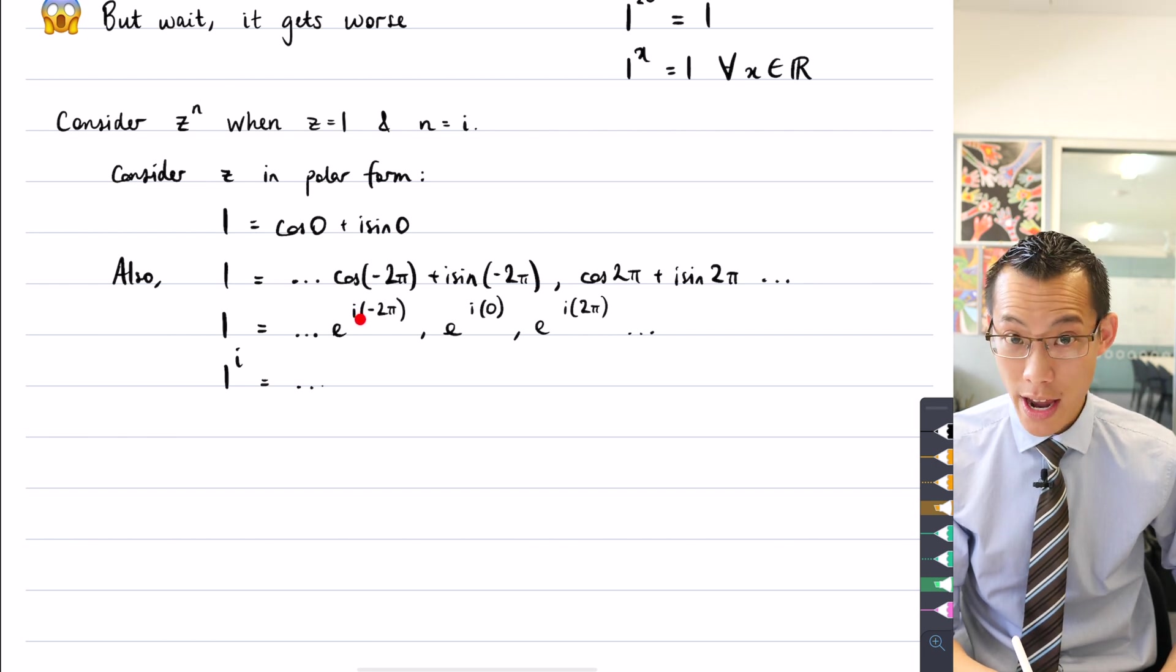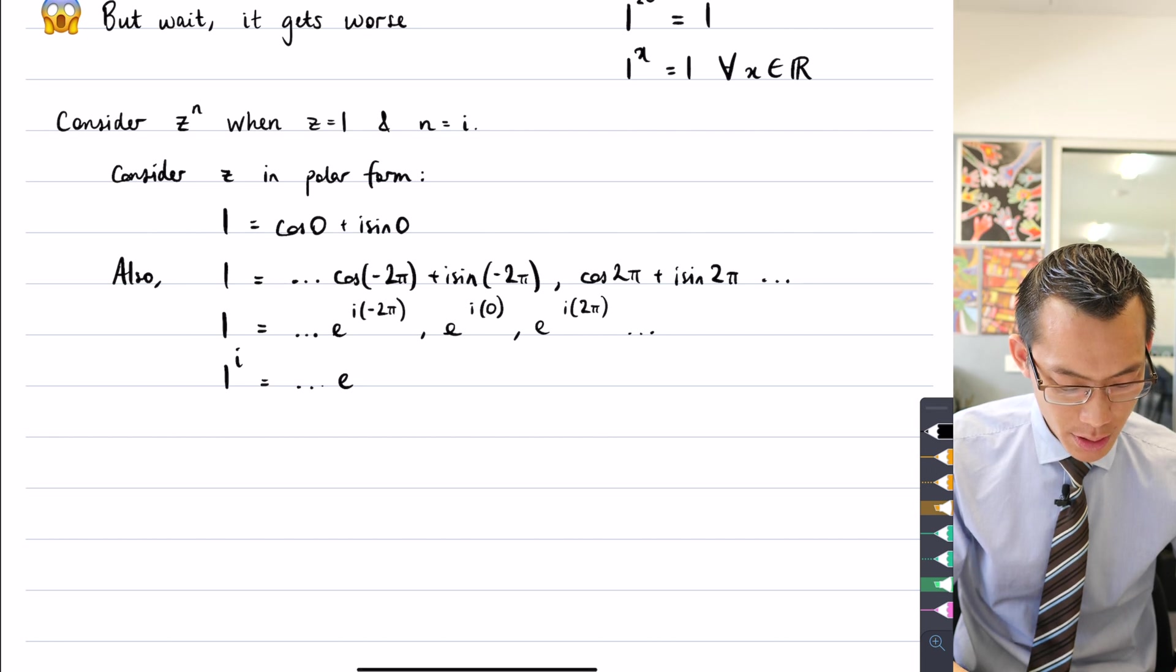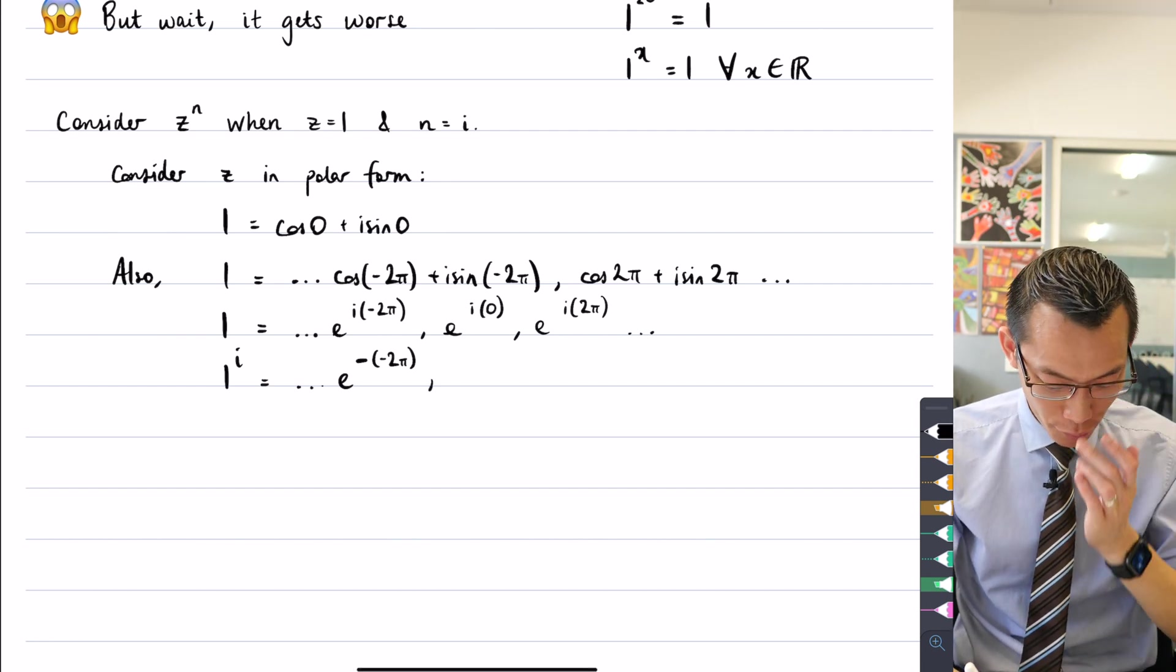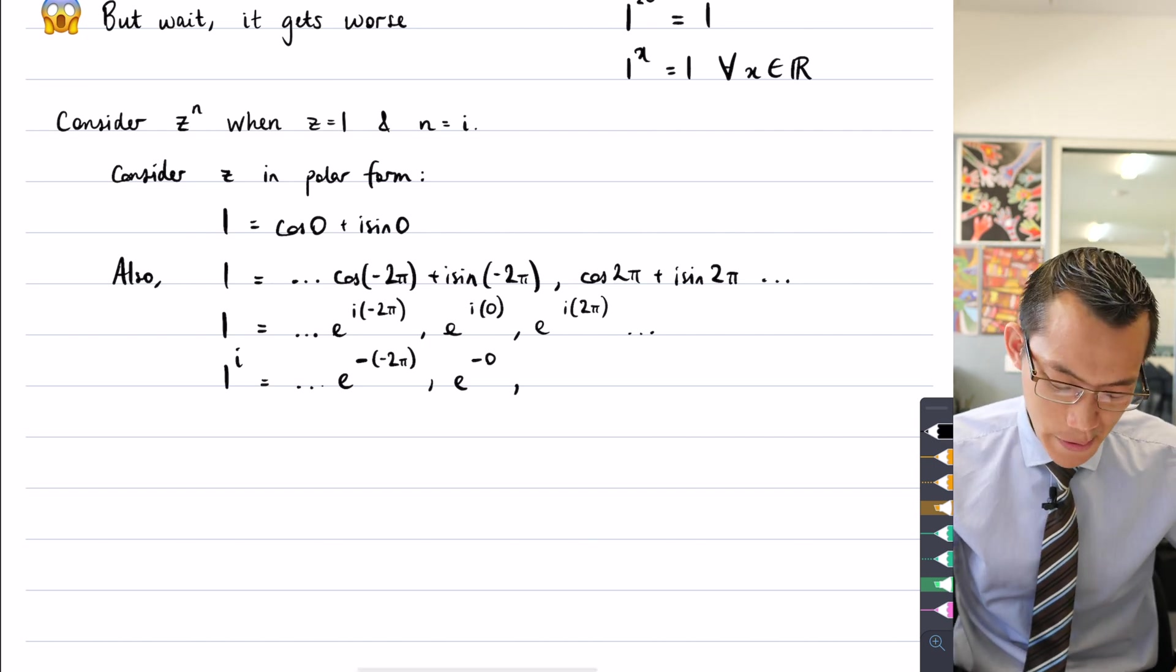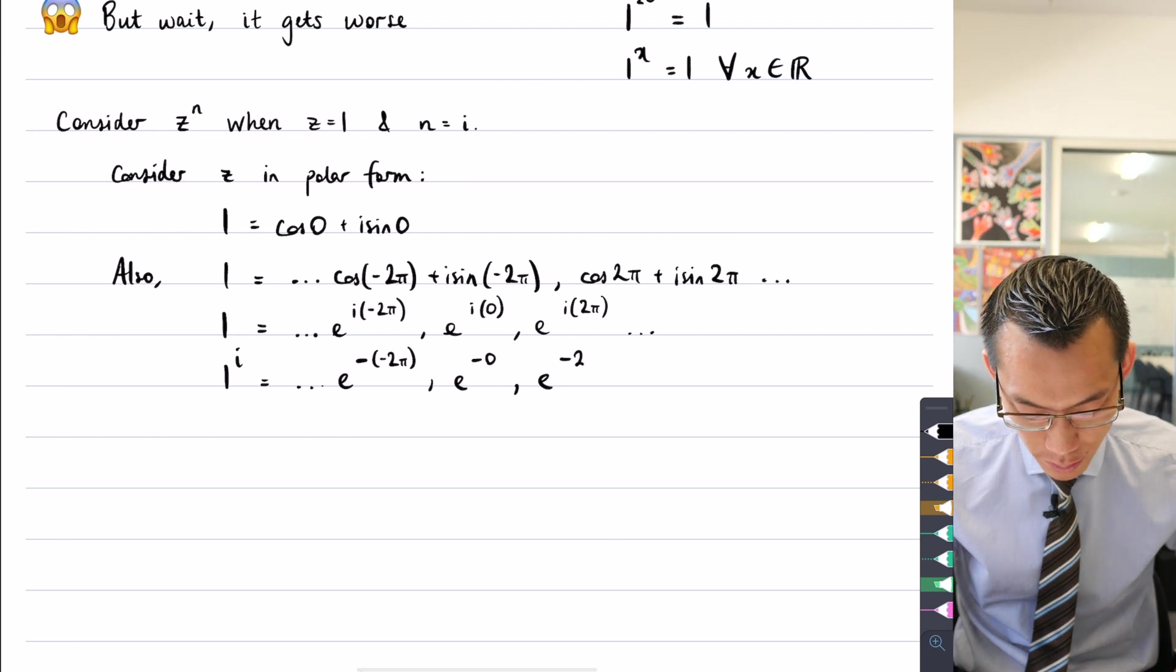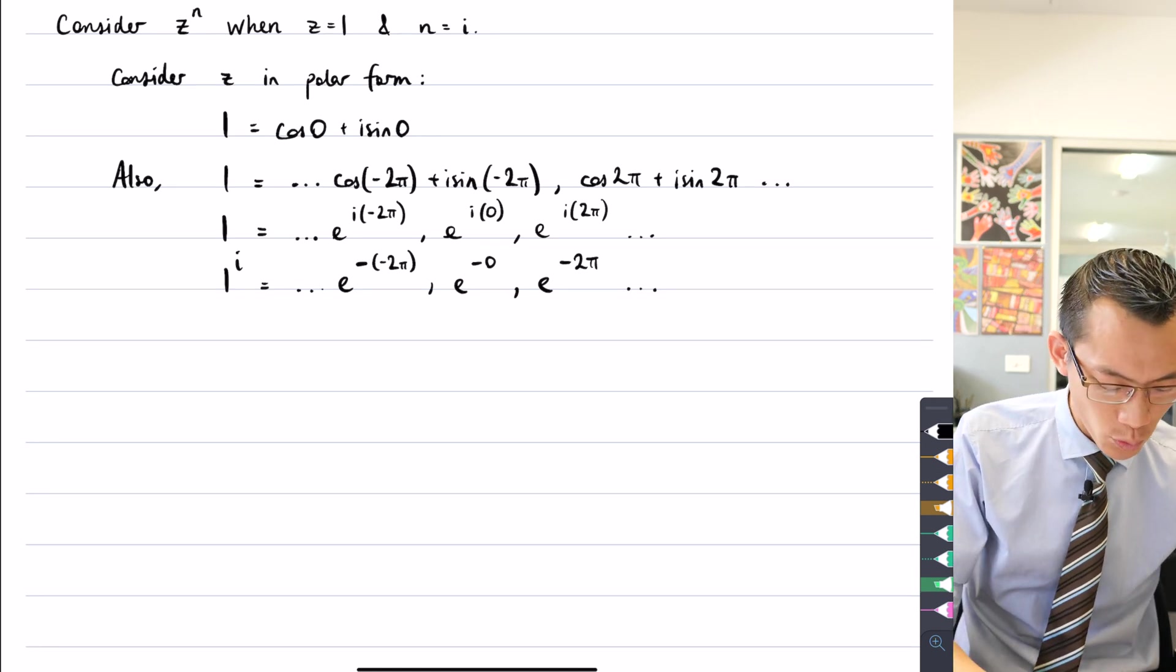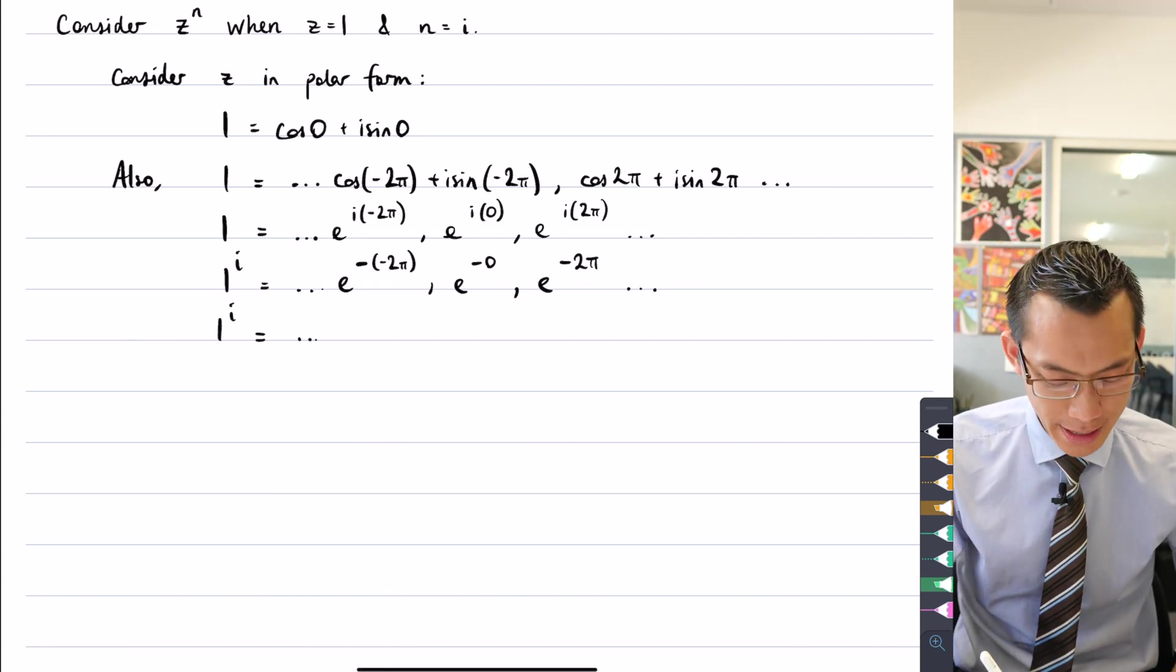So let's see here, I'm going to get i squared which is minus one, and then there's a negative two pi hanging out there. Here you're going to get i squared out the front again which gives you negative zero which is still zero, and then here you're going to get i squared times two pi, so that's negative two pi. So what we can see here is that in fact one to the power of i has these distinct values.